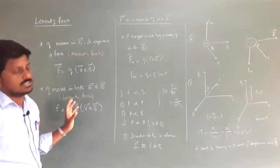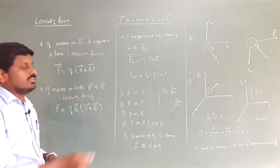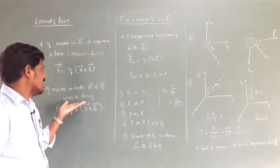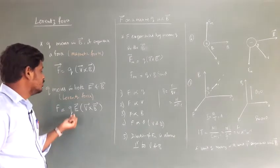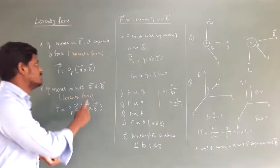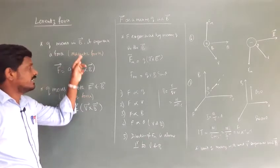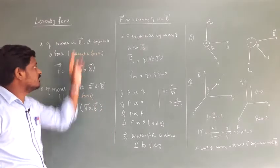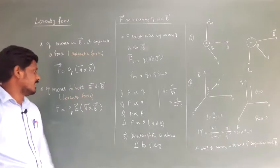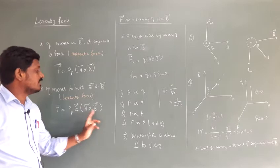When a charge — positive or negative — moves in both an electric field and a magnetic field, it experiences the Lorentz force. So F = q(E + v × B). Just compare these two equations: if the charge moves only in a magnetic field, F = q(v × B). If both electric and magnetic fields are present, F = q[E + (v × B)].